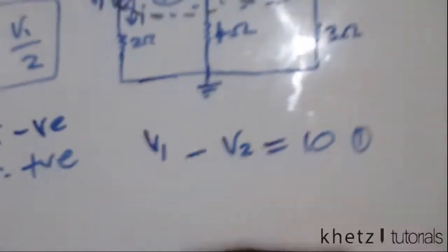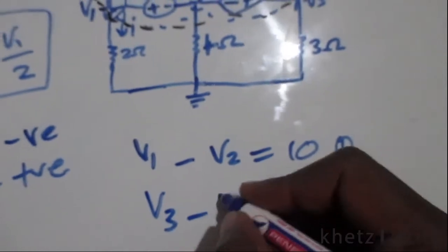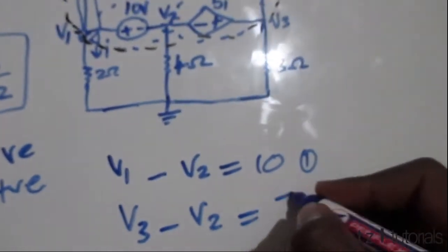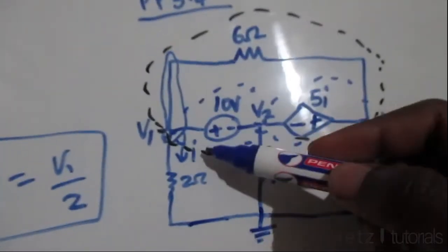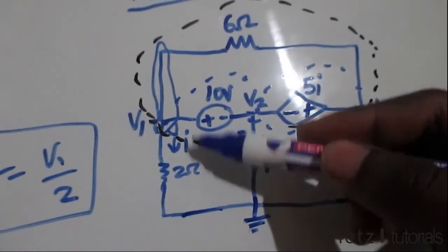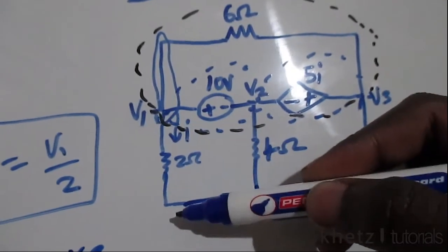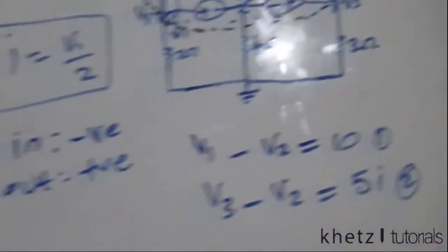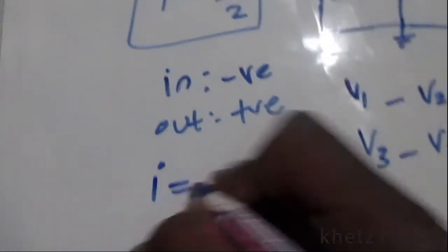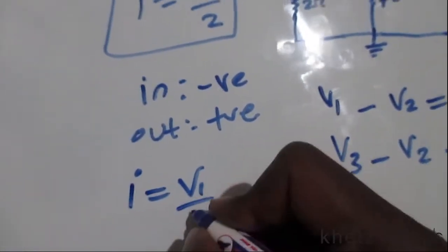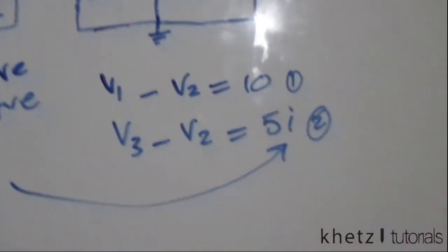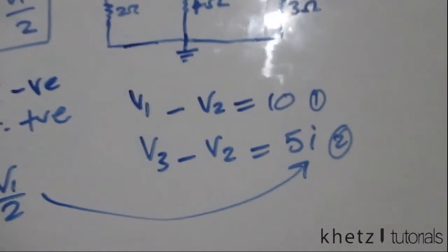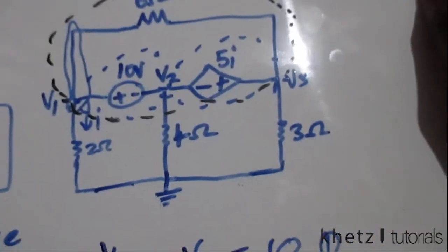For the second voltage source, the voltage between V3 and V2 is V3 minus V2, which equals 5i. Now i is defined as the current through the two-ohm resistor, so i equals V1 minus 0 divided by 2, which is V1 over 2. We'll substitute this in later.